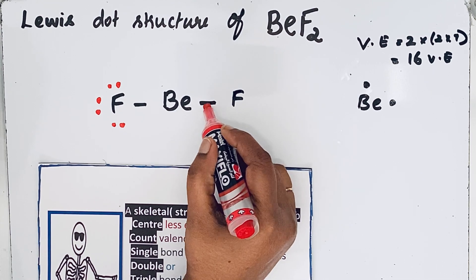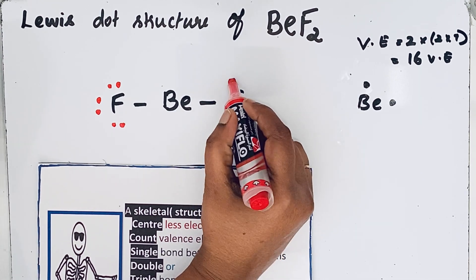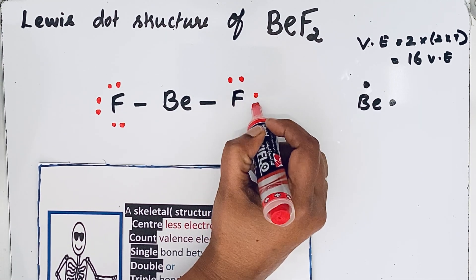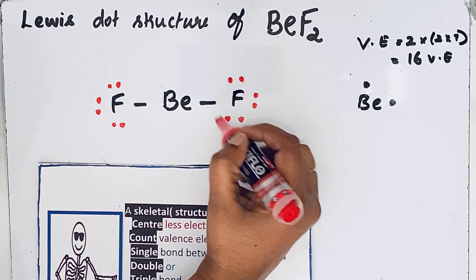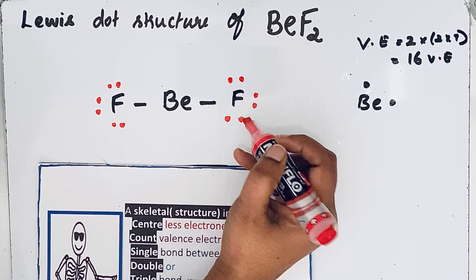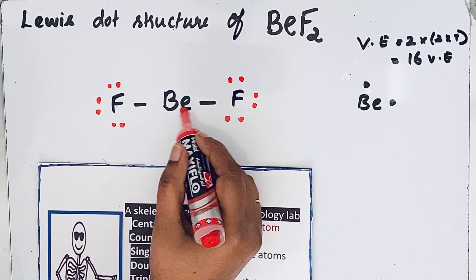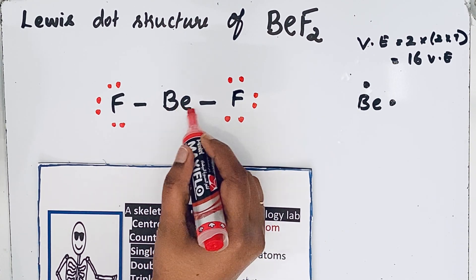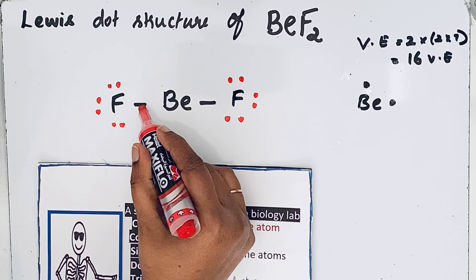Then for this fluorine also, already one bond, it means two electrons, so four, six, eight. So eight electrons, that means octet is completed. Beryllium, it is not necessary for the beryllium to complete that octet configuration, only four electrons because two bonds are here.